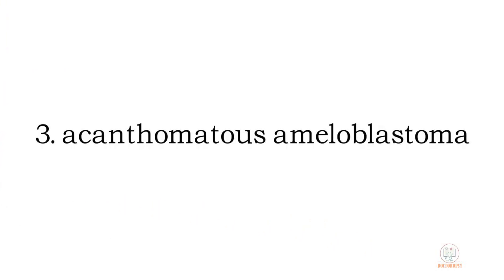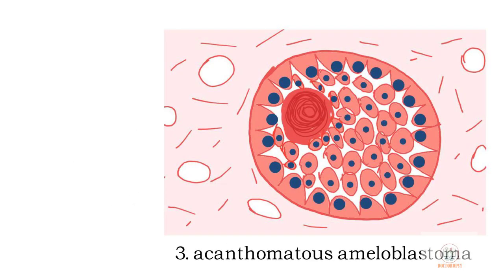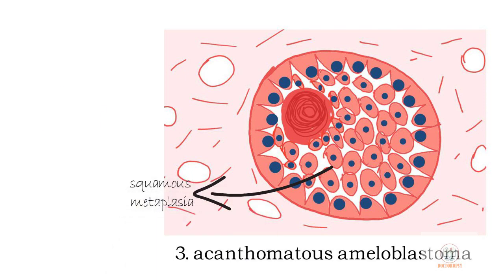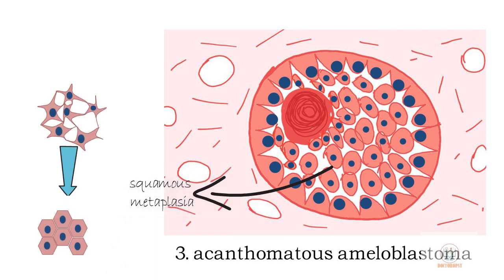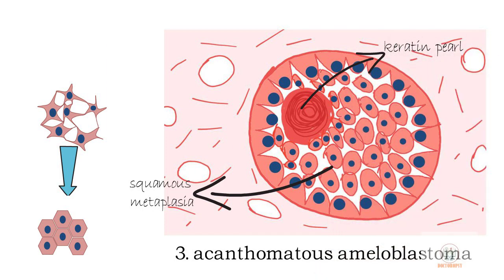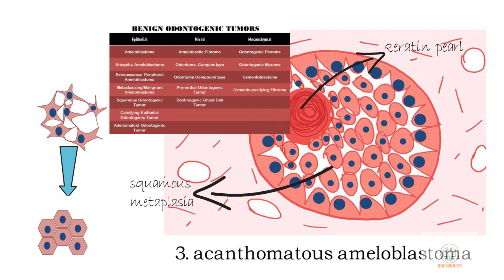The third type is the acanthomatous ameloblastoma, in which the stellate reticulum-like cells undergo squamous metaplasia — when one type of cell transforms into a different type. The squamous cells, having the property to produce keratin, may form keratin pearls within the tumor islands. Acanthomatous ameloblastoma is more commonly seen in the peripheral or extraosseous ameloblastoma.